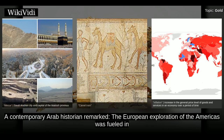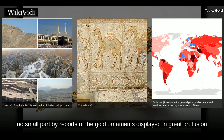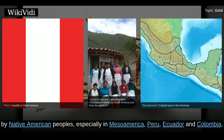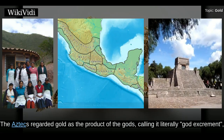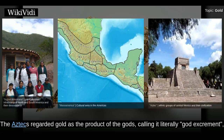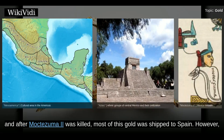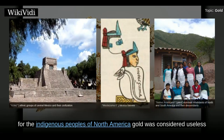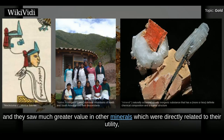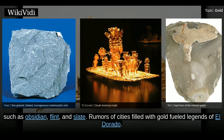The European exploration of the Americas was fueled in no small part by reports of the gold ornaments displayed in great profusion by Native American peoples, especially in Mesoamerica, Peru, Ecuador and Colombia. The Aztecs regarded gold as the product of the gods, calling it literally 'god excrement', and after Moctezuma was killed, most of this gold was shipped to Spain. However, for the indigenous peoples of North America, gold was considered useless and they saw much greater value in other minerals directly related to their utility, such as obsidian, flint and slate. Rumours of cities filled with gold fuelled legends of El Dorado.